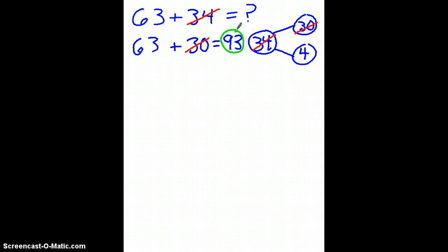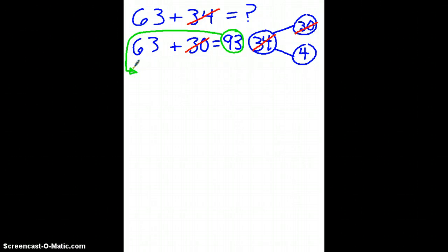The sum that I've gotten so far, I'm going to move down, because I'm really adding 63 plus 34. So far, I've only added 30 to 63. That's just one of the parts of my number bond.